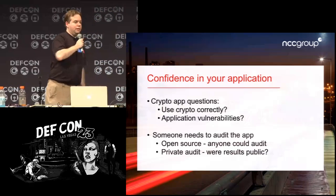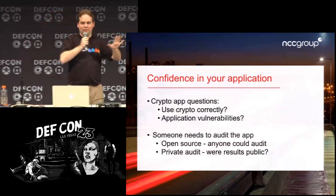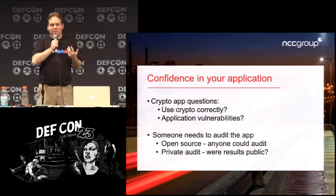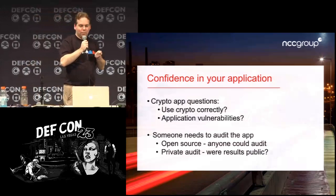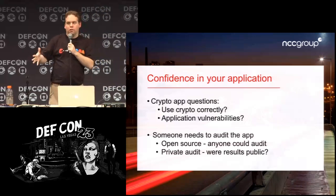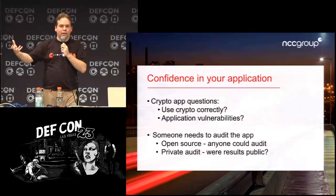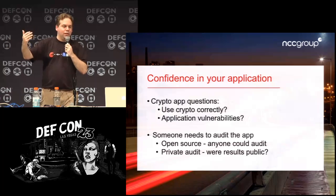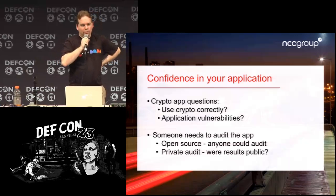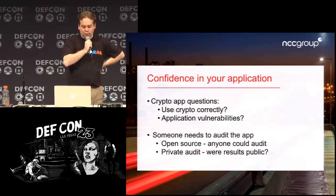Besides all the things we just talked about — end-to-end encryption, key validation, perfect forward secrecy — those are only a piece of the puzzle. We waved away the crypto implementation details, but in the real world things can go wrong when developers write crypto code. They could use the wrong algorithms, or have non-crypto vulnerabilities that let an attacker take over the app and read messages as the app decrypts them.